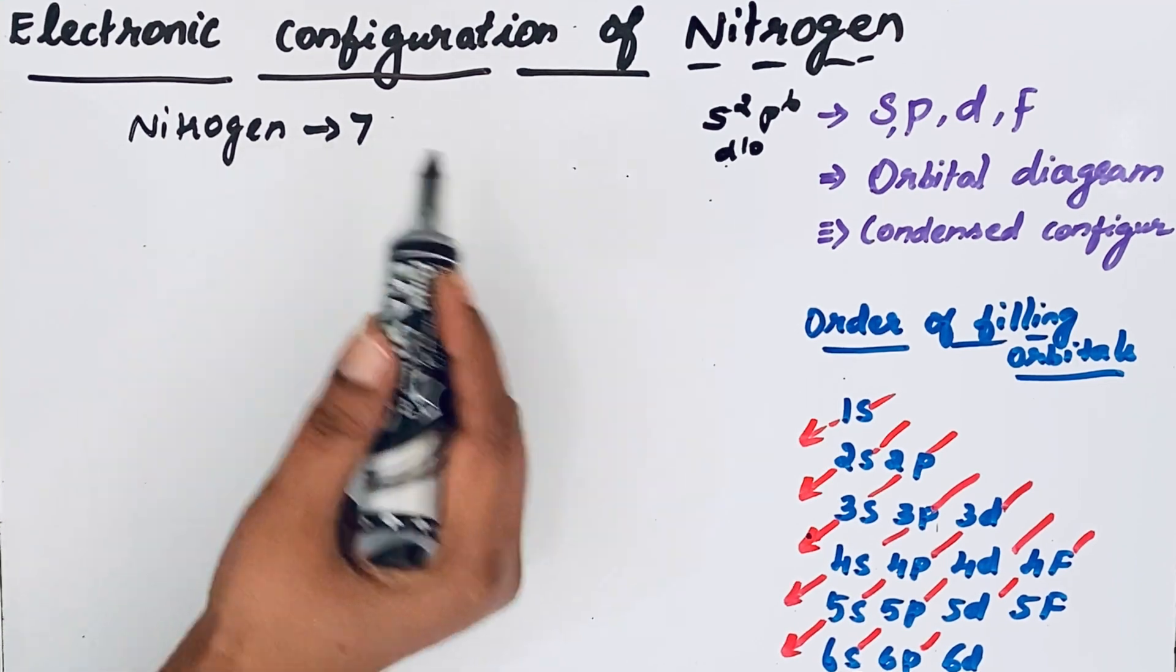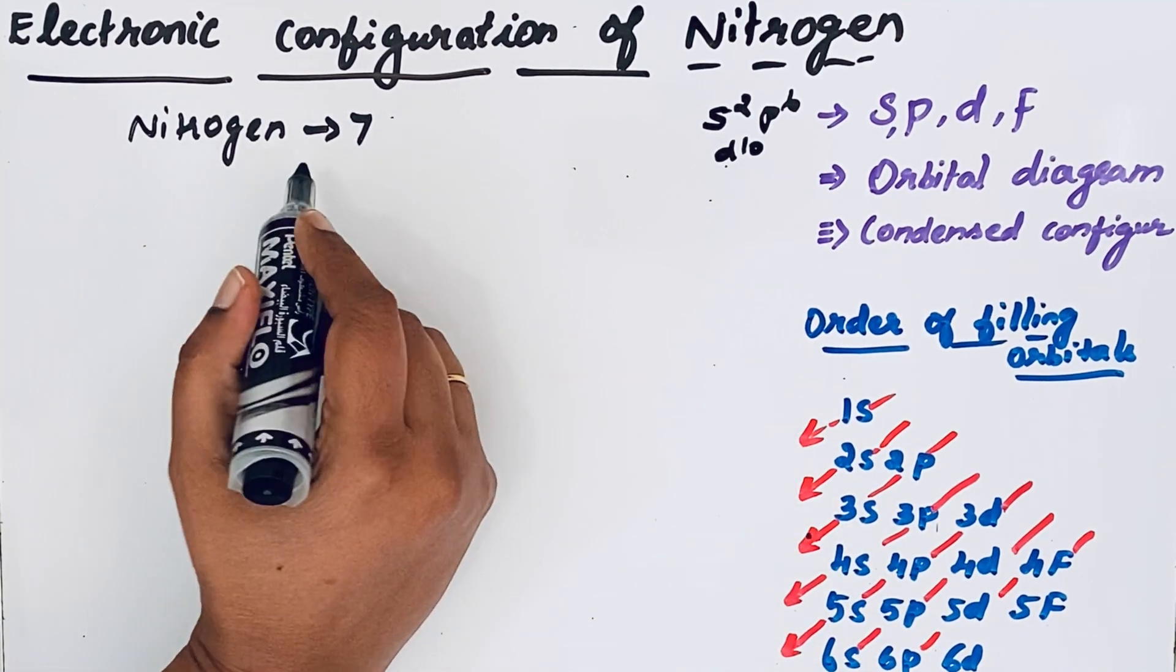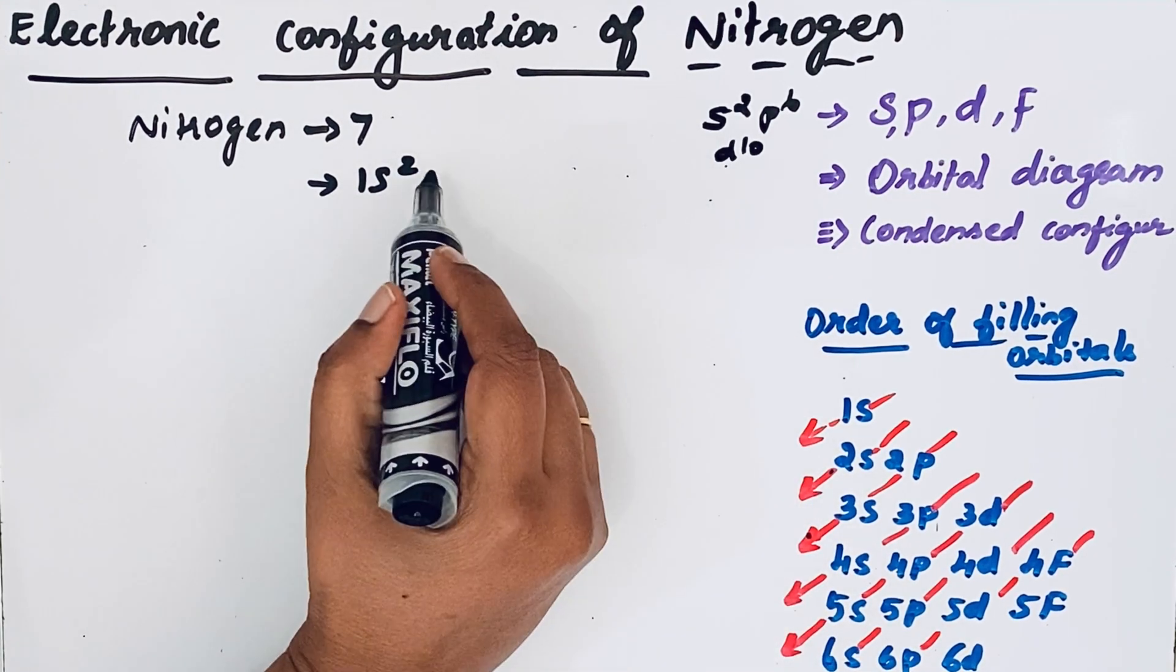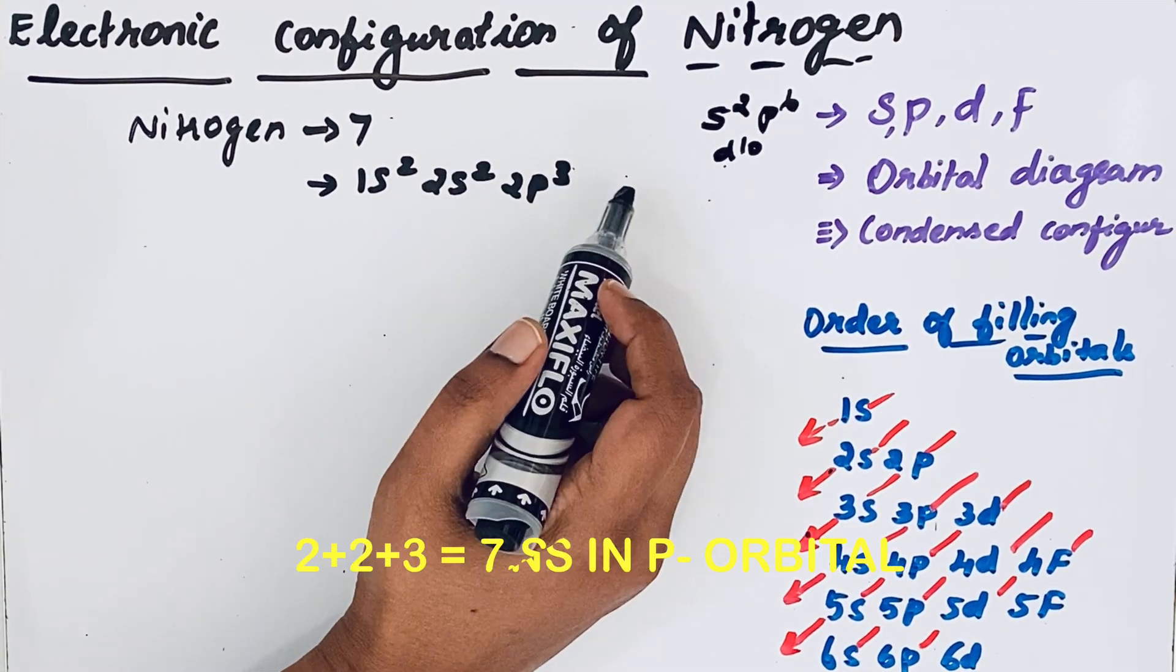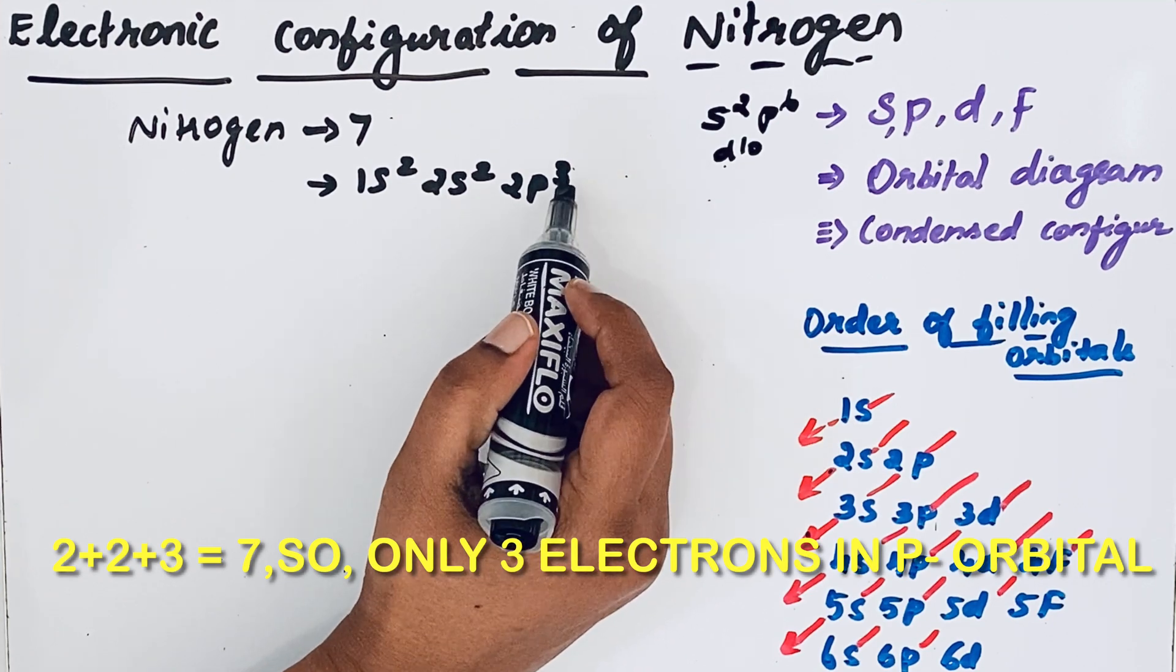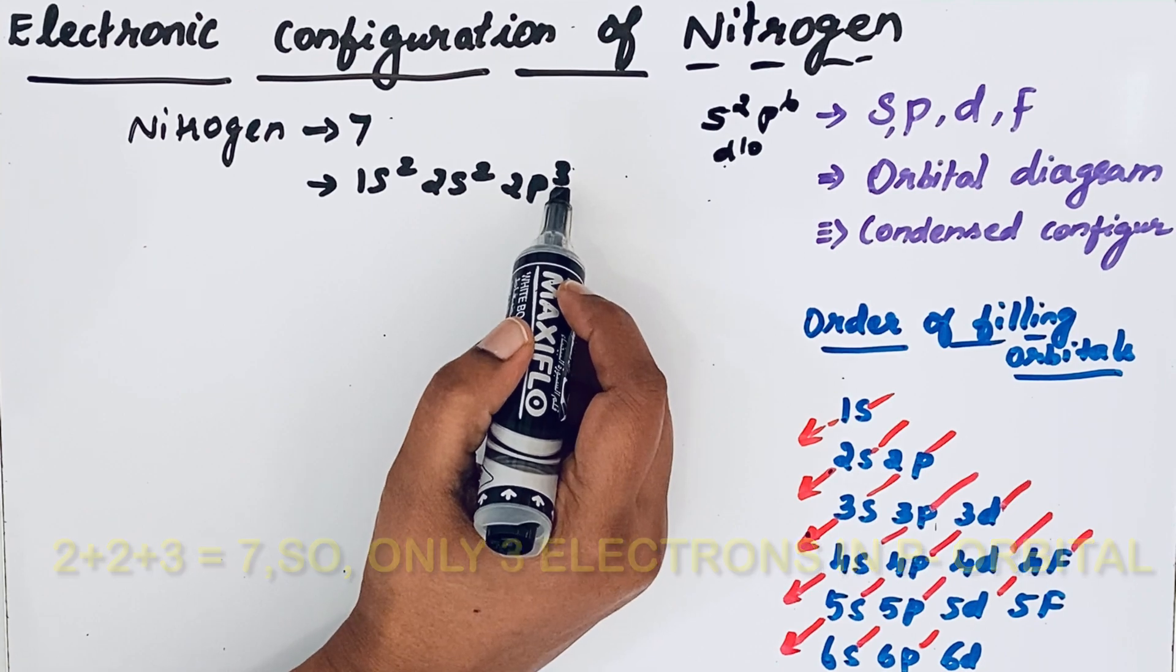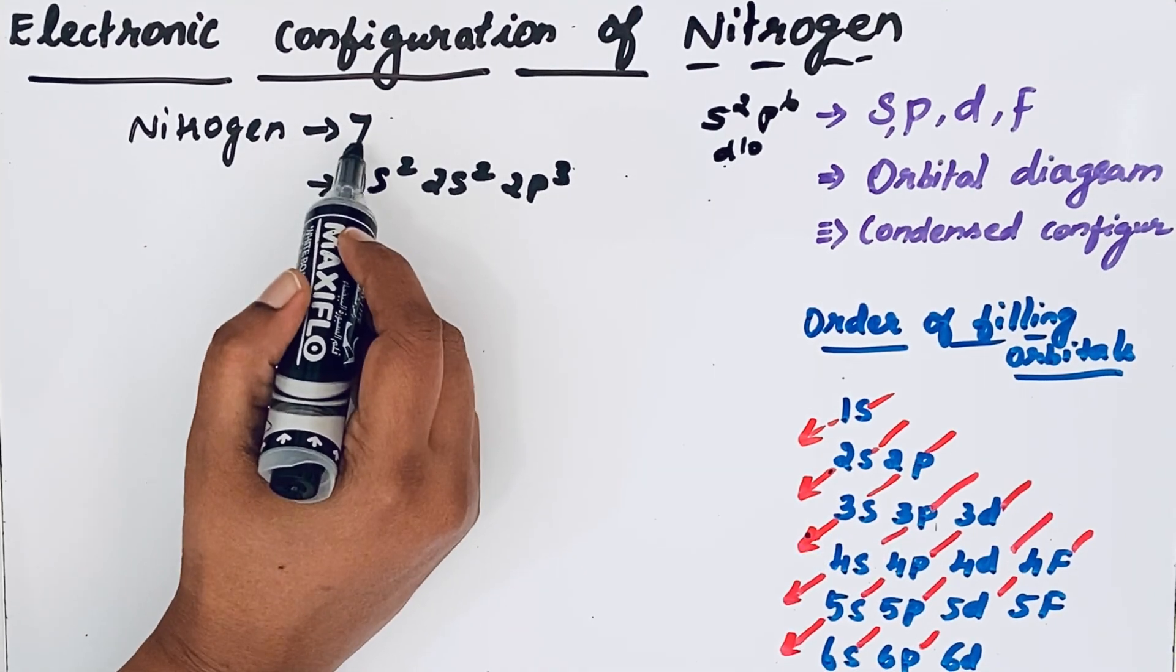Number of electrons is 7. So we can write 1s2, then after that 2s2. Even though maximum number of electrons in p orbital is 6, but in nitrogen it can take only 3 electrons because number of electrons in nitrogen is 7.